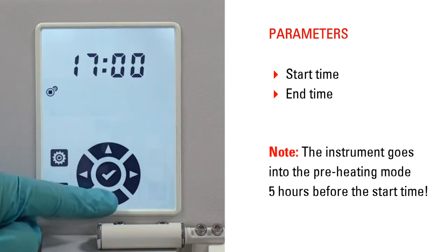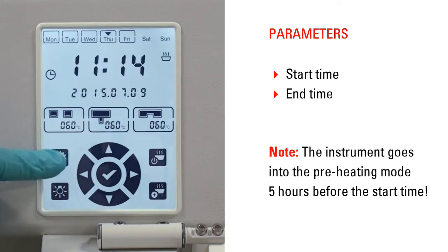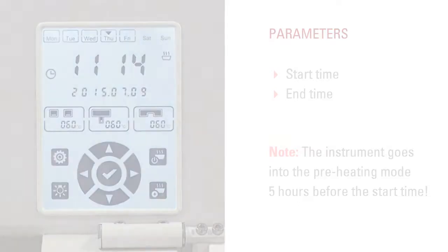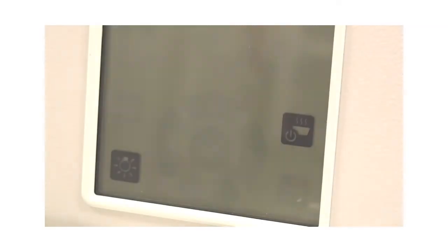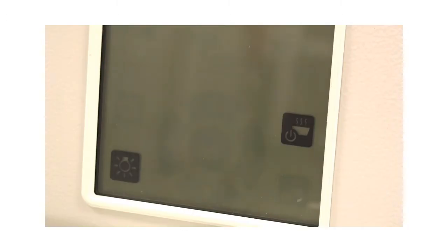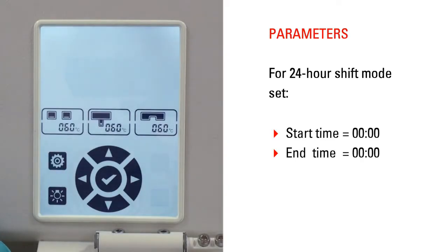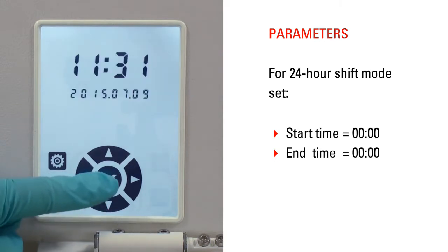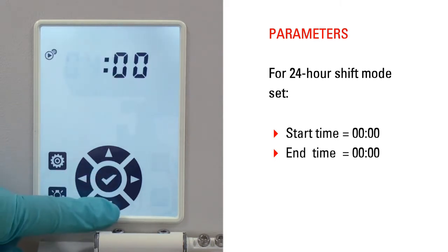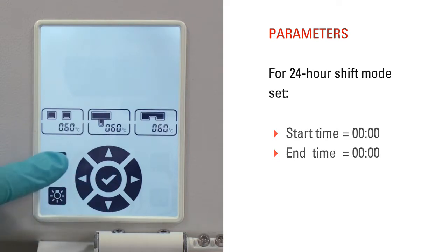Set start and end time of the desired operating mode with the control buttons. The instrument goes into the preheating mode 5 hours before the start time. The instrument switches on or off automatically at the programmed start and end times and goes into standby mode. The Arcadia embedding system is able to run in 24 hour shift mode. Set the start time and end time to the same value and the instrument will run continuously, even on days that are not defined as workdays.